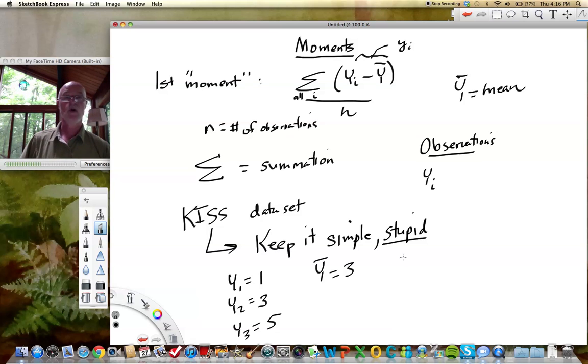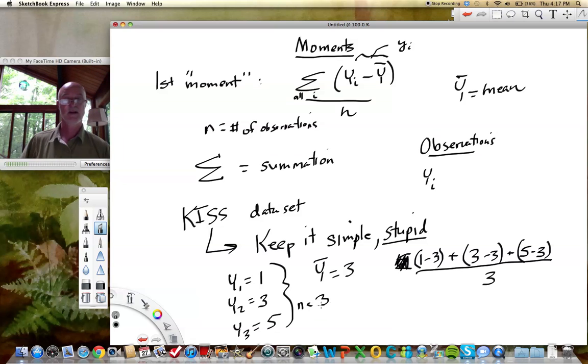Let's apply the first moment formula to this. So if we sum all the deviations, we have 1 minus 3 plus 3 minus 3, which is Y2, and then we're going to add 5 minus 3, and we're going to divide all of that by the number of observations, N equals 3 in this data set. So what does that give us? That gives us minus 2 plus 0 plus 2 all divided by 3, and you can easily see that that is 0.